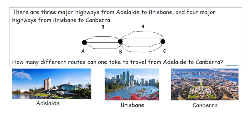One way we can approach this problem is with a tree diagram. From our first city to our second city, we have three possible routes, and from our second city to our third city, we have four possible routes. So I could take my first highway, and then pair it with my second, third, or fourth highway — giving me four different routes if I take that first highway.